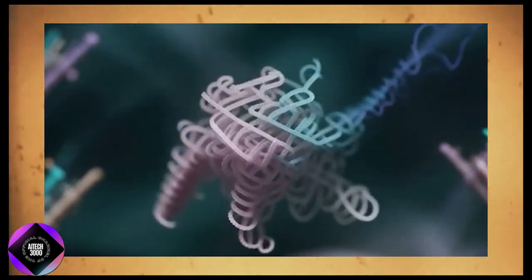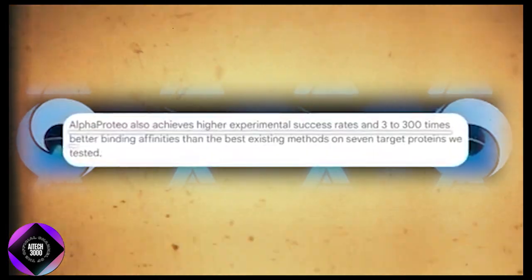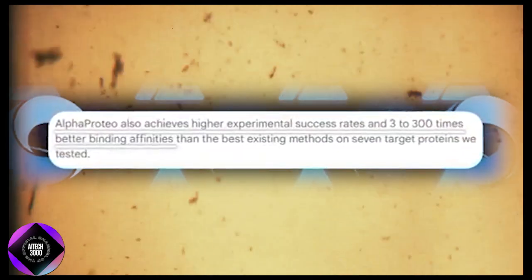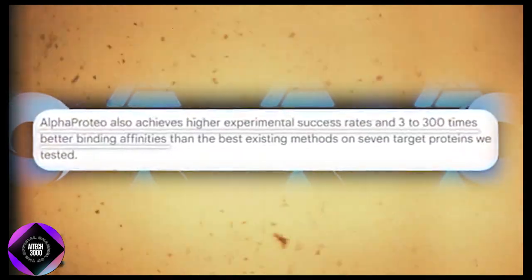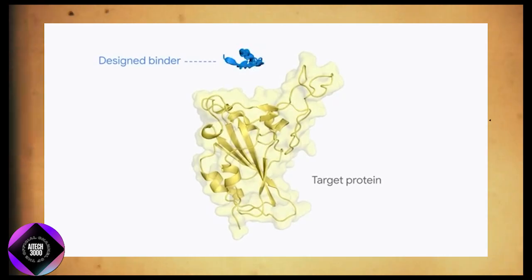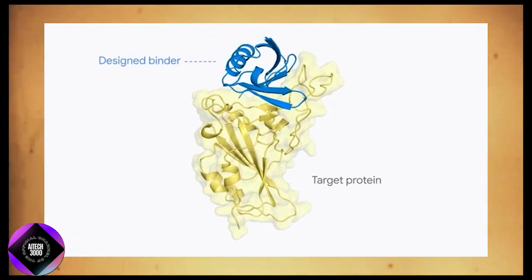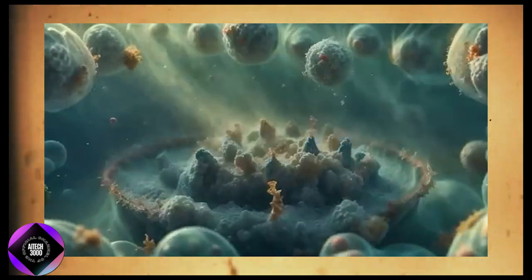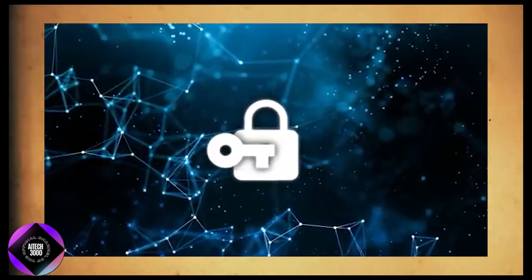So it's learned a lot about how proteins interact. When you give AlphaProteo the structure of a target protein and specify where you want it to bind, it can design a binder protein that fits almost perfectly. It's like handing over the blueprint for a lock and getting a perfectly tailored key in return.